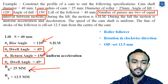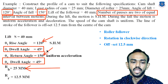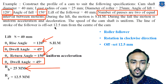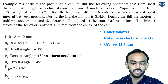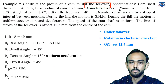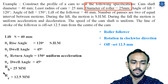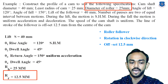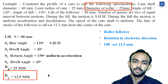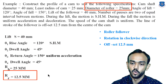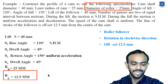The base radius is given as 25 mm. The roller diameter is given in the example, so the roller radius is 12.5 mm.